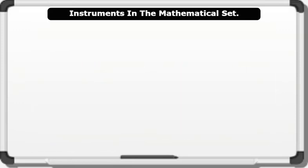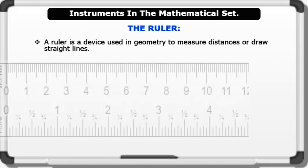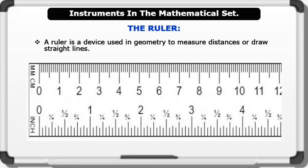Instruments in the mathematical set include: 1. The ruler. A ruler is a device used in geometry to measure distances or to draw straight lines. Below is the image of a ruler. It is calibrated in centimeters and in inches.